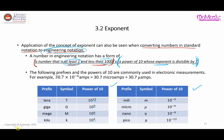When you have 10 to the power of negative 6, the prefix is 'micro'. So you can replace 10 to the power of negative 6 with the word micro placed next to the unit. Instead of writing 30.7 times 10 to the power of negative 6 amperes, you can write 30.7 microamperes.